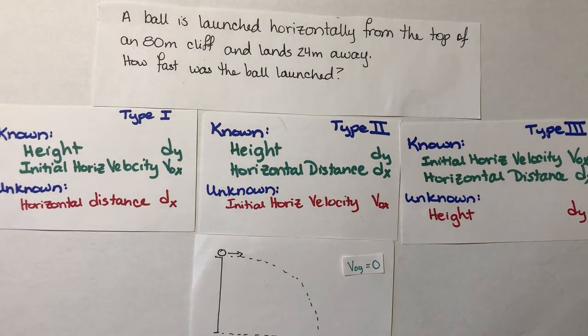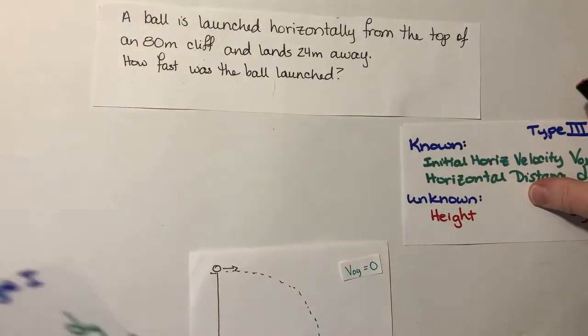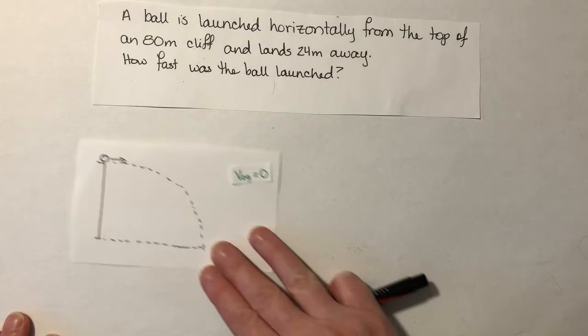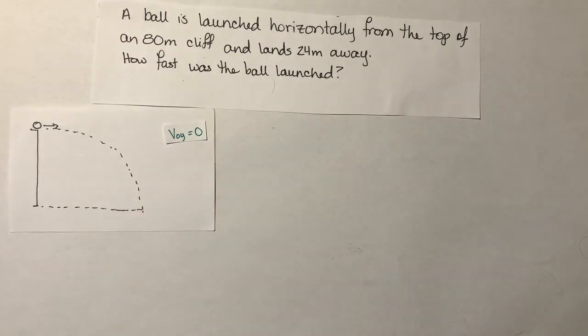I have a ball and it is launched horizontally from the top of an 80 meter tall cliff and it lands 24 meters away. How fast was the ball launched? Step 1 in solving any physics problem is make a well labeled diagram. So here's my diagram. I'm going to label it.